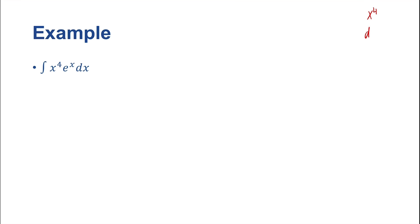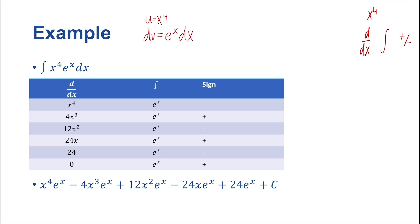We set up a d/dx column, an integral column, and a plus-or-minus column. We first need to determine what U and dV are going to be. Our U is almost certainly going to be x^4, so U = x^4, and by process of deduction dV = e^x dx. We can ignore the differential for this method. Let me show you the full table and we'll work through it together.